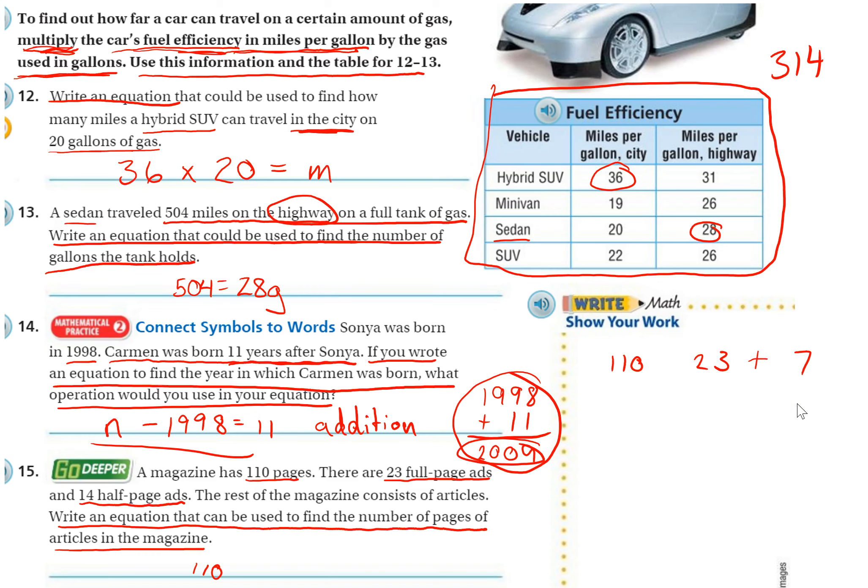Now, again, they don't want us to solve this, so I'm going to have to be careful and not actually solve this. 23 plus 7 plus the variable, which should equal 110. So we can say 110 equals 23 plus 14 half-page ads, right? 14, but they're half of a page, plus we'll say A for articles, and that should give us our total. So there's my equation.